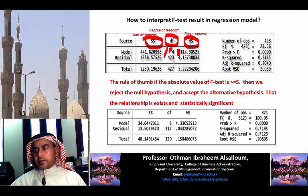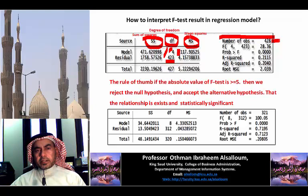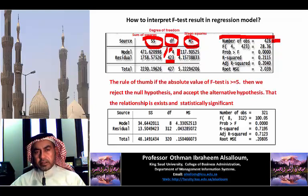The degree of freedom for residual is the number of observations minus the number of dependent and independent variables overall, which is 4 plus 1, which is 5. So 423 equals 428 minus 5.